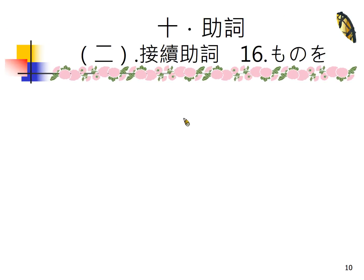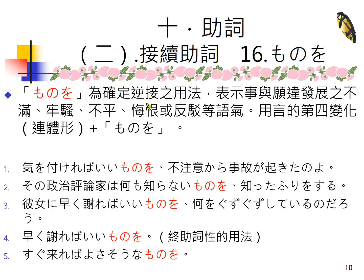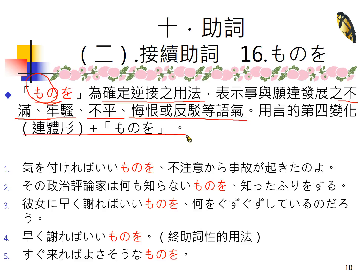ものの不常见但是见到的时候希望同学能够正确理解。接下来第十六个——ものを。ものを虽然是もの加を，但它已经被当成一个接续助词来使用。它是确定逆接的用法，相当于のに、くせに，但它表示事与愿违的发展，后面有所不满、发牢骚、悔恨或反驳等等的语气。通常用言的第四变化连体型来接它，因为是もの开头所以用连体型的方式来接。例句：気をつければいいものを不注意から事故が起きたのよ——你只要注意小心的话就好了，但是却因为不注意所以才发生事故的，你看你看！所以有时候表示牢骚不平或悔恨，就是这样子。